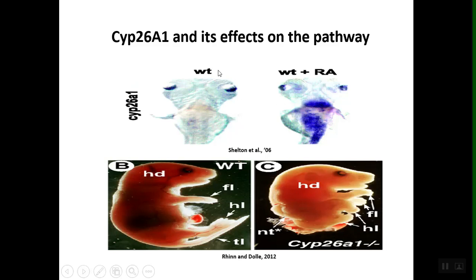The major thing that also contributes to this pathway is CYP26A1. In this figure, we can see CYP26A1 — it stains blue. We have wild type and wild type plus retinoic acid. In the wild type situation — a zebrafish — there is no CYP26A1 and no RA present. In the wild type plus retinoic acid situation, retinoic acid is added and CYP26A1 staining (blue) shows up. So in the presence of retinoic acid, CYP26A1 is also present.